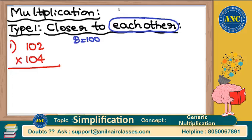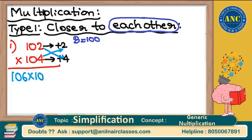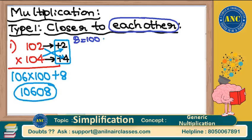102 is 2 more than 100, and 104 is 4 more than 100. Step number 2: do cross addition. 102 plus 4 is 106, or 104 plus 2 is also 106. Then multiply the two differences: 2 into 4 is 8. So 106 into 100 is 10600, plus 8. Answer is 10608.